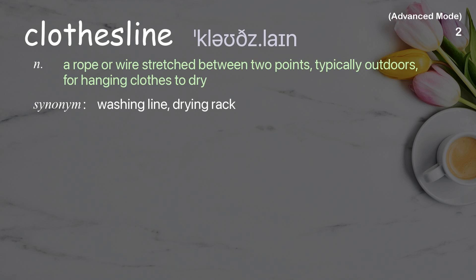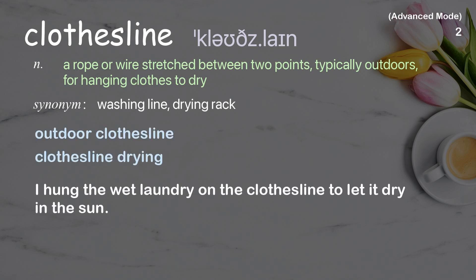Clothesline. A rope or wire stretched between two points, typically outdoors, for hanging clothes to dry. Examples: outdoor clothesline, clothesline drying. I hung the wet laundry on the clothesline to let it dry in the sun.